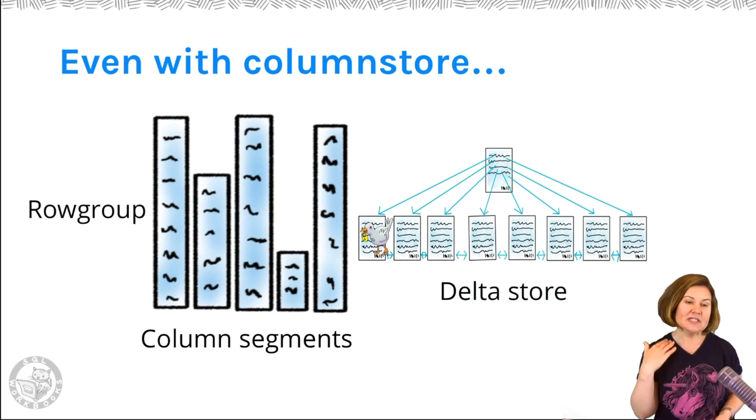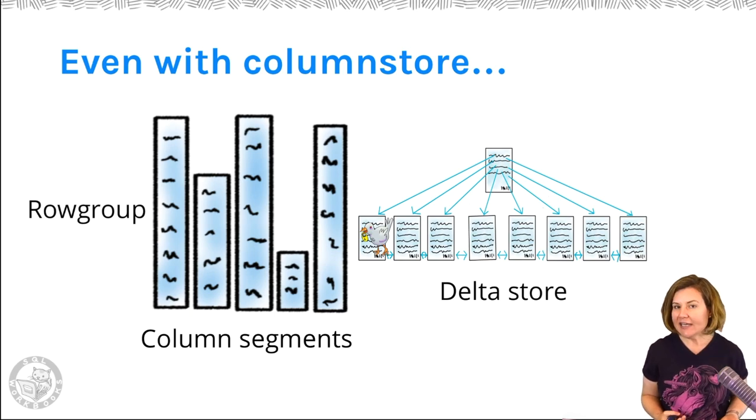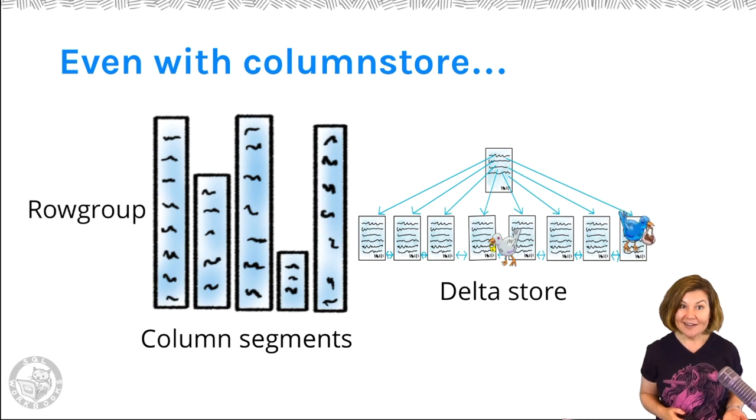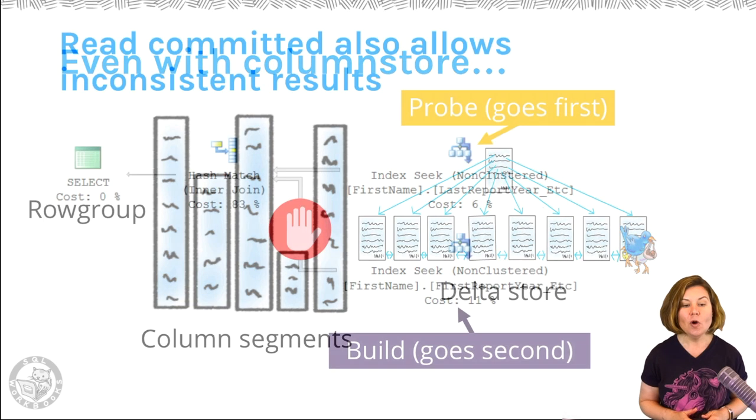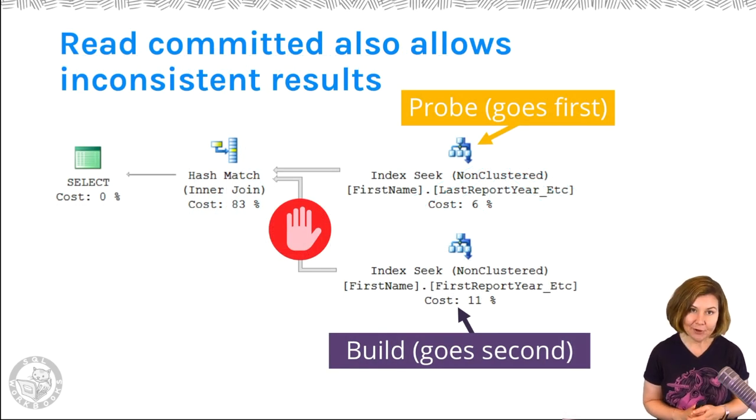This can even happen in disk-based column store indexes if we're using the read committed isolation level and modifications are happening to the table where we have the column store index. That's because the delta store on the column store index can have a similar scenario happen where we can count rows twice in the delta store or miss rows entirely.